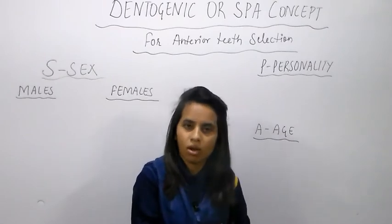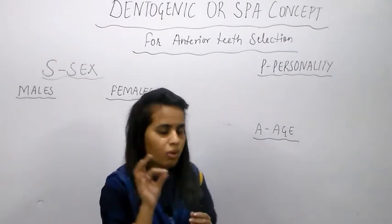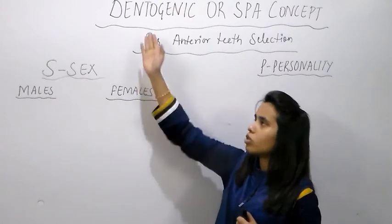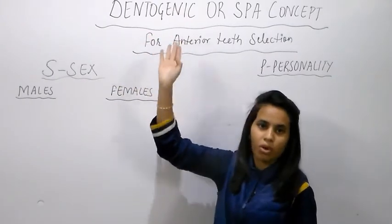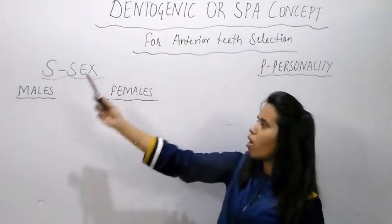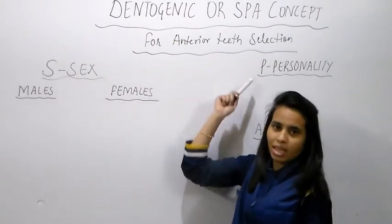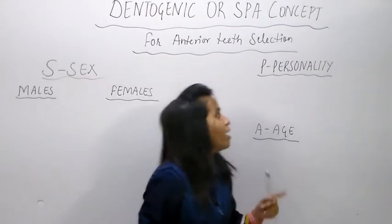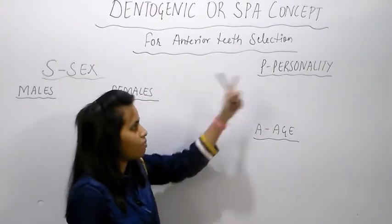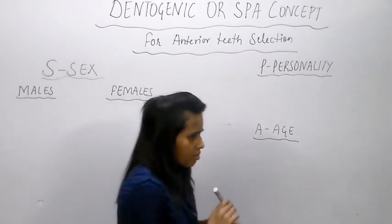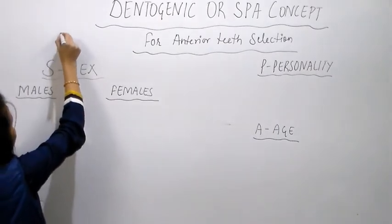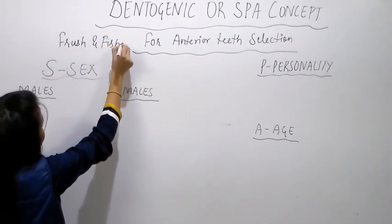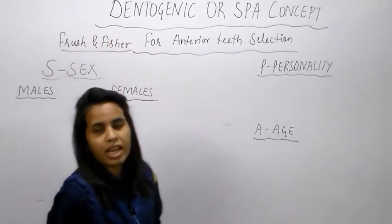These factors include anterior teeth's size, shape, and form. This concept regarding anterior teeth form is called the dentogenic concept or SPA factor. SPA's full form is Sex, Personality, and Age — meaning a patient's anterior teeth form depends on these three factors. This concept was discovered by Frush and Fisher, and it is a very important concept.